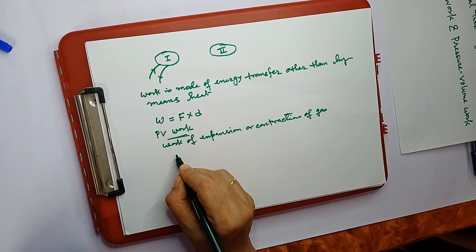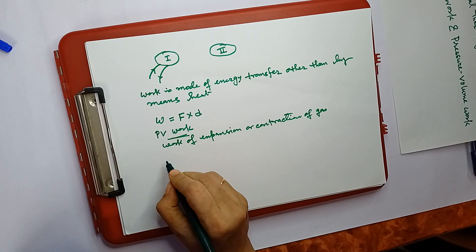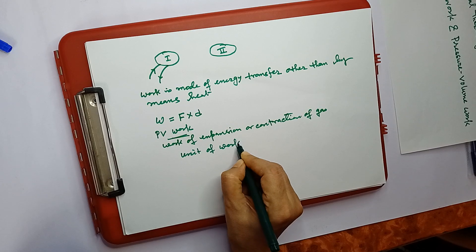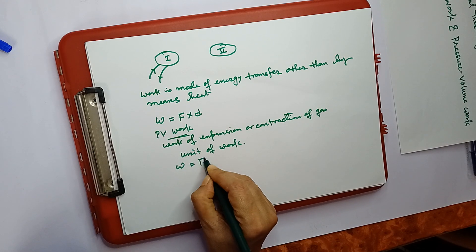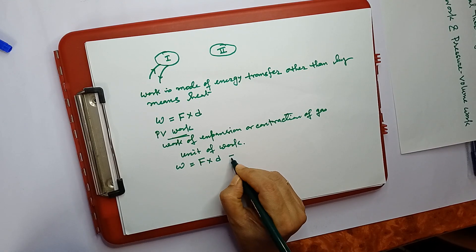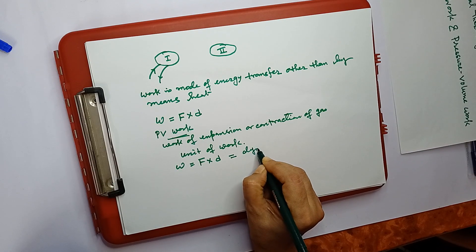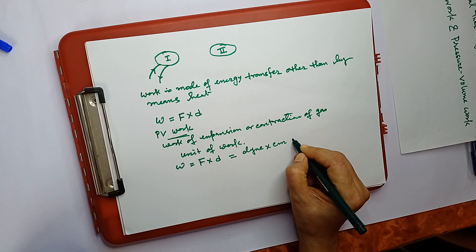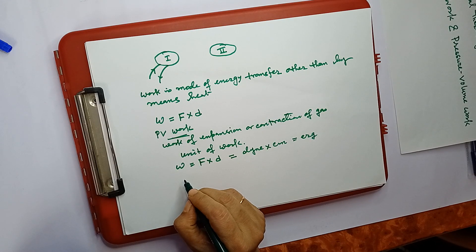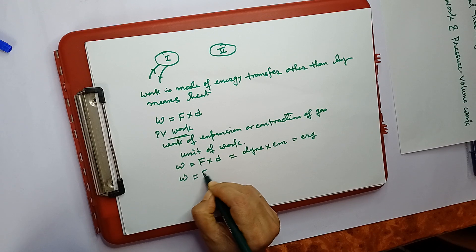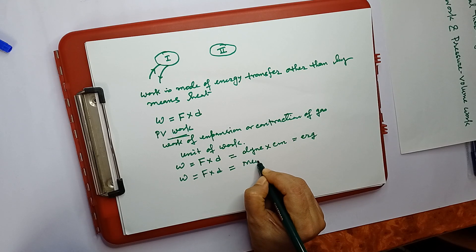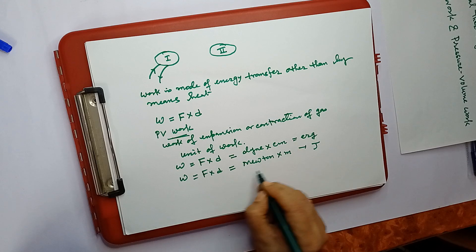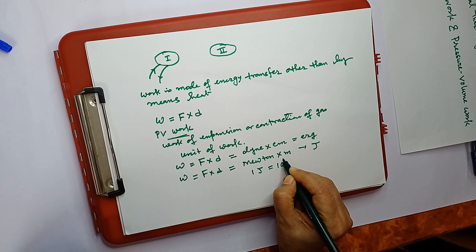Now we will come to the unit of work. Work is force into displacement. In the CGS system, the unit of force is dyne and the unit of displacement is centimeter, so the unit of work is dyne-centimeter, which is known as erg. In the SI system, the unit of force is Newton and displacement is meter, so the unit is Newton-meter, which is known as joule. And 1 joule is equal to 10 to the power 7 ergs.